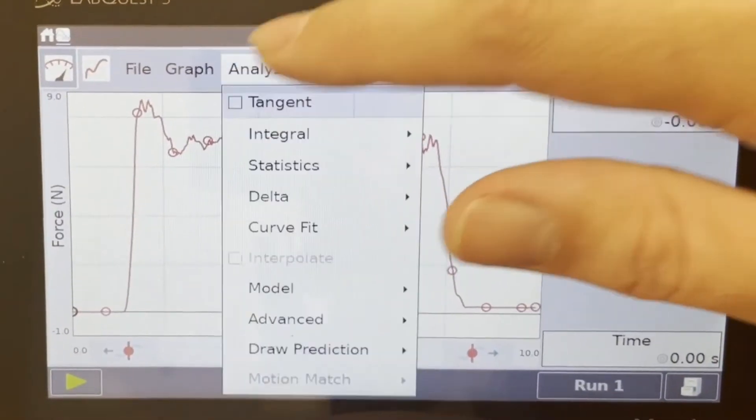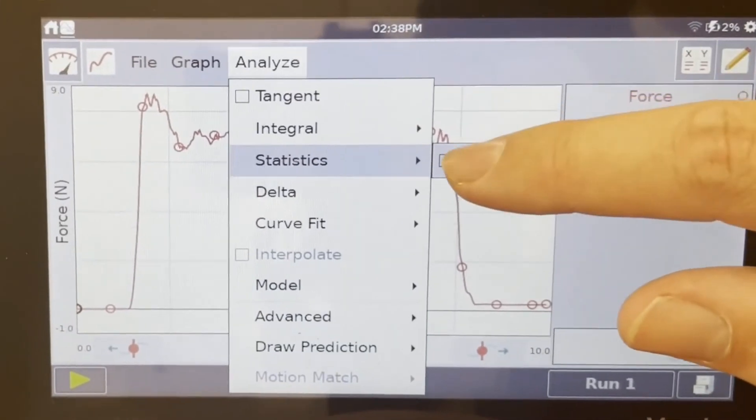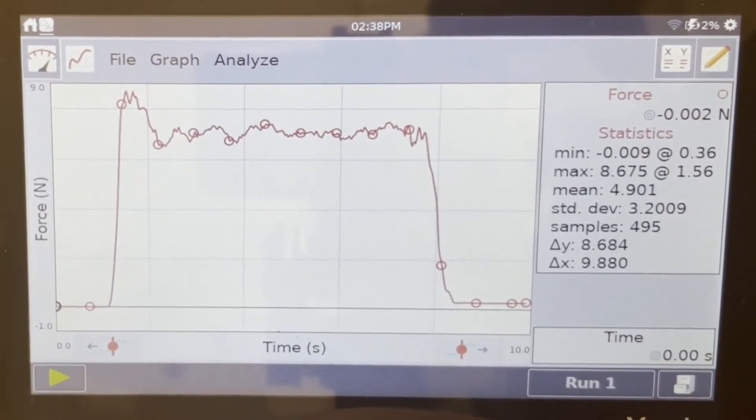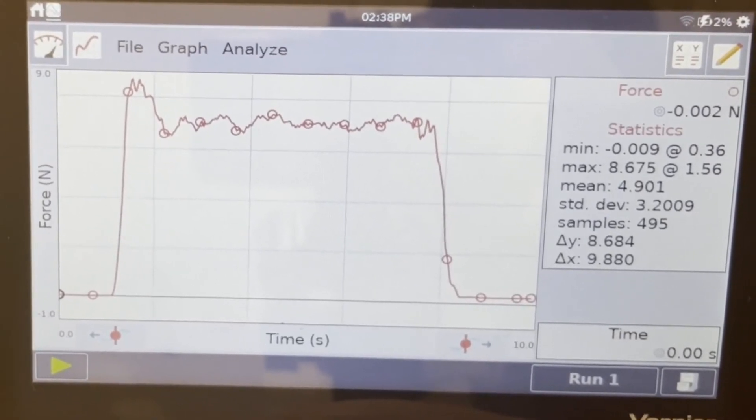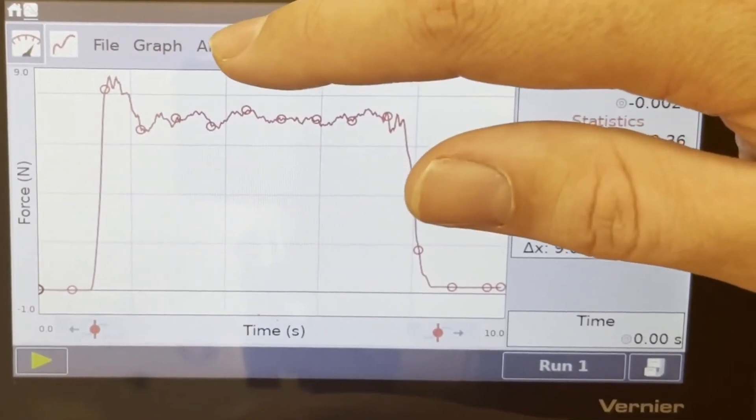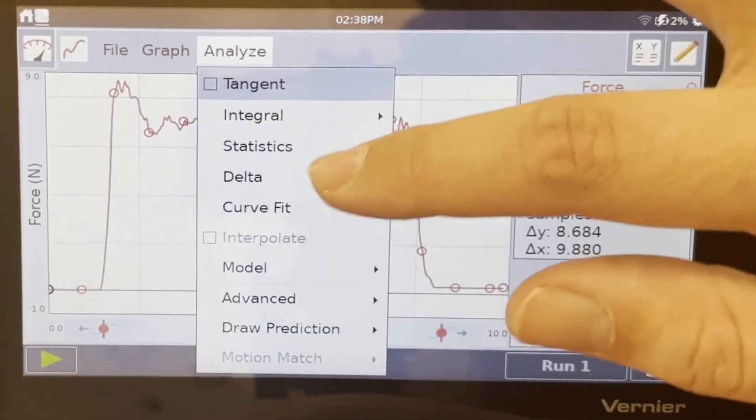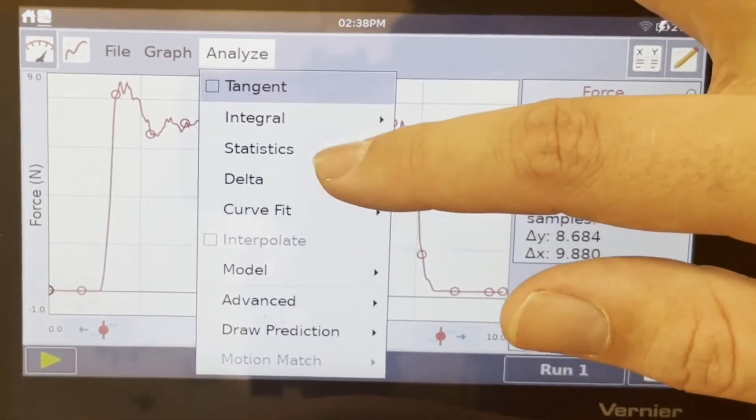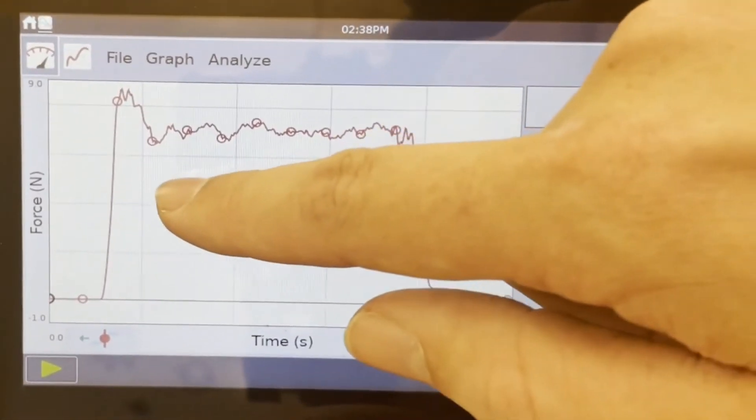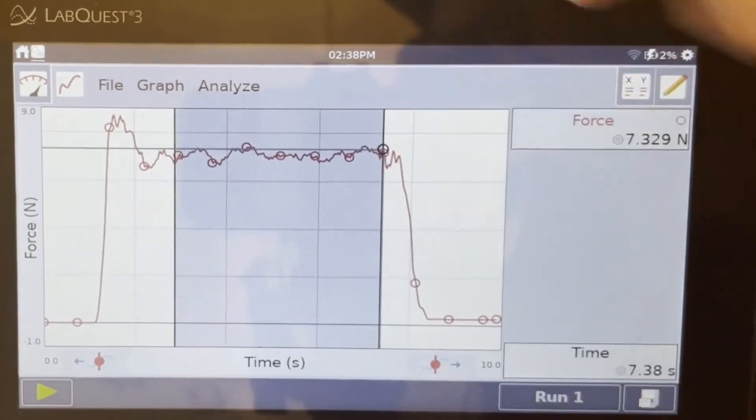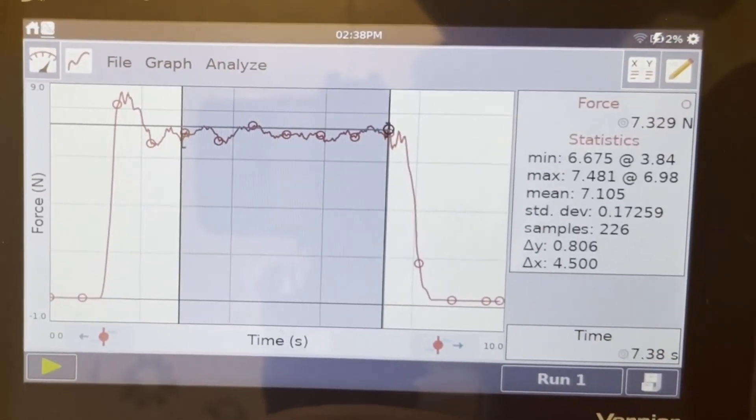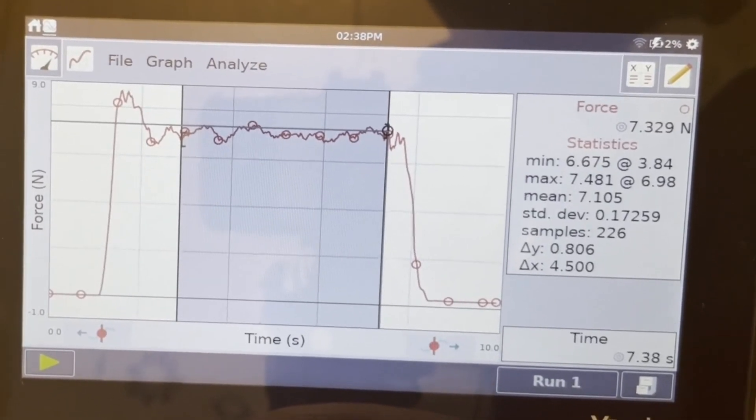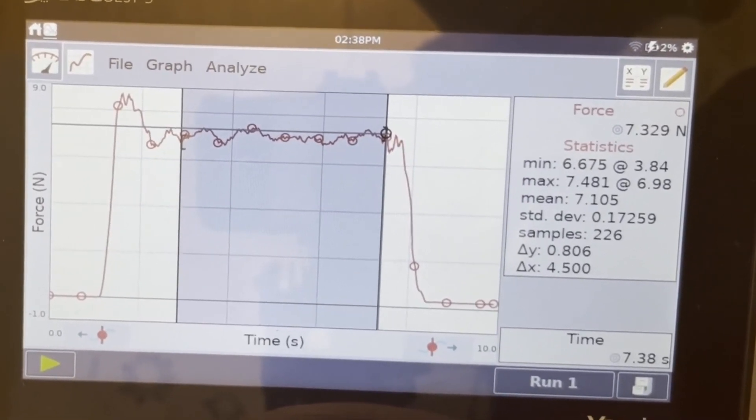Let's check out that maximum value for static friction. And it is 8.675 newtons. And now let's look at the average for the kinetic friction. And we get 7.105 newtons.